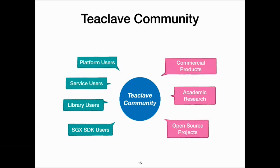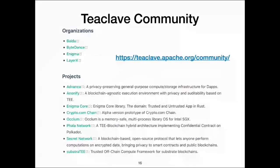The Teaclave community has already supported many projects including commercial products, academic research projects, and other open-source projects. You can find them on our homepage teaclave.apache.org. In our community homepage you can see that organizations like Baidu, Enigma, CryptoCom, Chain, Parla Network, Secure Network, and others all use Teaclave as a platform and library or use the Rust SGX SDK. Overall, we encourage all people in the community to come and get involved, whether to use this project or contribute to it.